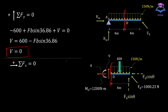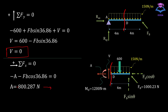Applying the last equation of equilibrium, summing all forces in the X direction equals zero, taking rightward forces as positive. We have minus N (acting to the left, negative) minus FB cos(36.86°) (acting to the left, negative) equals zero. Solving gives N equal to 800.287 Newtons. Since the result is negative, N should act in the opposite direction, meaning to the right, in order to maintain equilibrium.